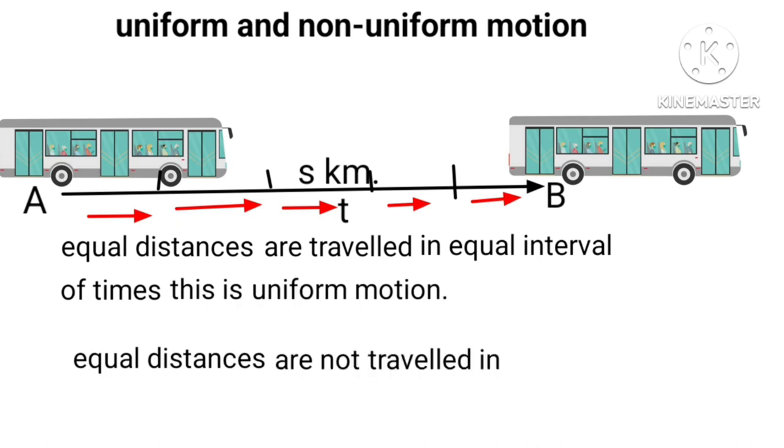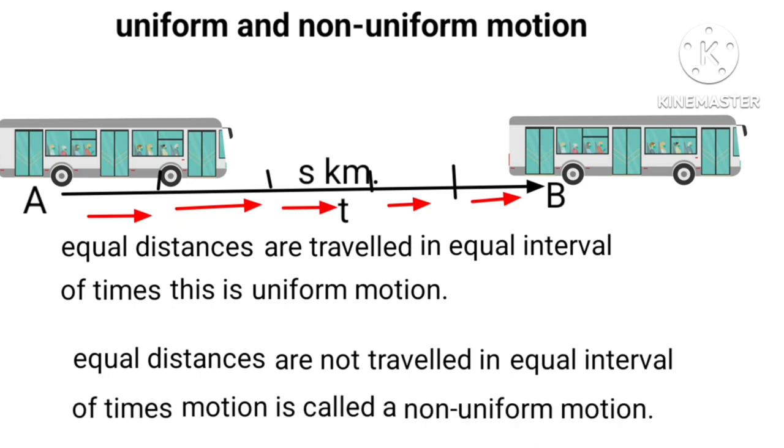If equal distances are not traveled in equal interval of times, motion is then called a non-uniform motion.